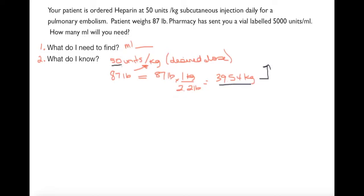Now I can use that to finish off my desired dose. I want 50 units for every kilogram, so I'm multiplying 39.54 times by 50, and I get 1977 units. That is my desired dose.